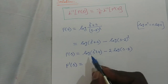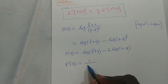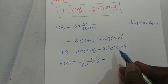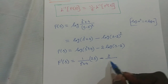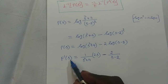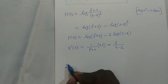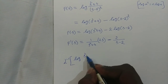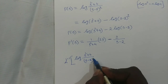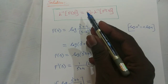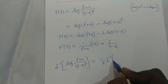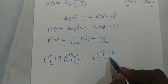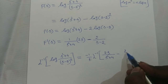F'(s): the differential of log x is 1/x. So we get 1/(s² + 4) times 2s for the first term, minus 2 times 1/(s − 2) for the second term, since the differential of log(s − 2) is 1/(s − 2). Therefore F'(s) = 2s/(s² + 4) − 2/(s − 2).